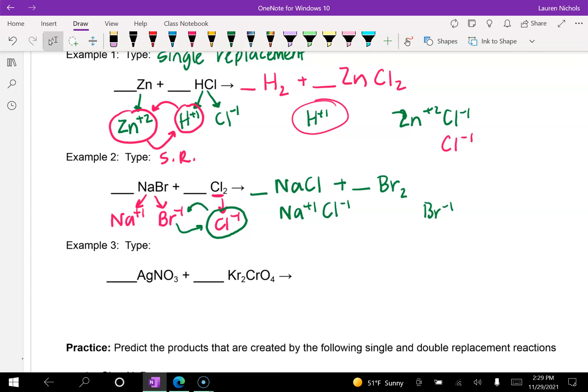The third example, notice there's nothing single here. There are no single elements. So this is going to be a double replacement reaction. Now, in a double replacement reaction, especially this type where there are polyatomic ions, you might not be able to see that it still splits apart into two things, the positive and the negative.